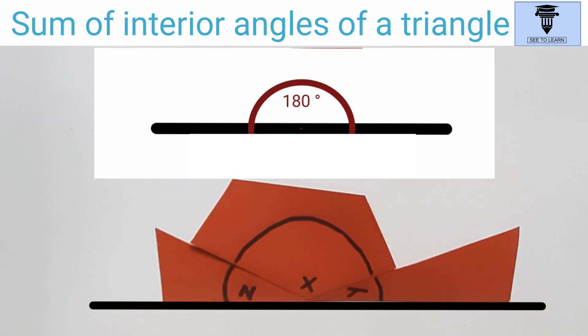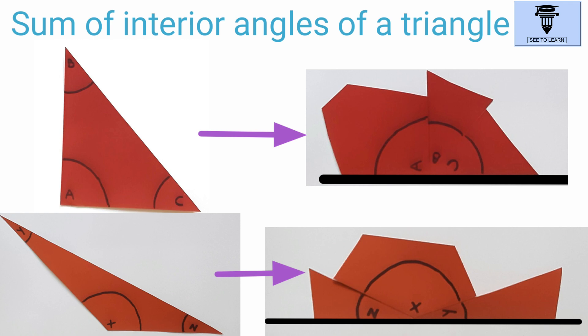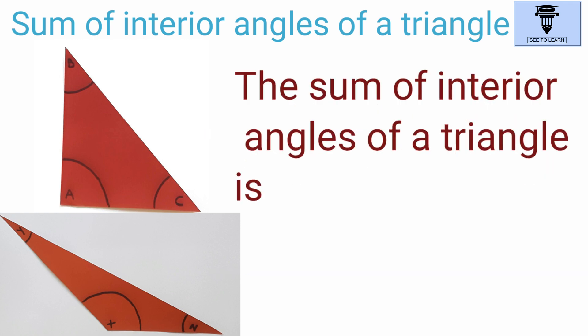That is an angle of 180 degrees. So here what do we conclude? The sum of the interior angles of a triangle is always 180 degrees.